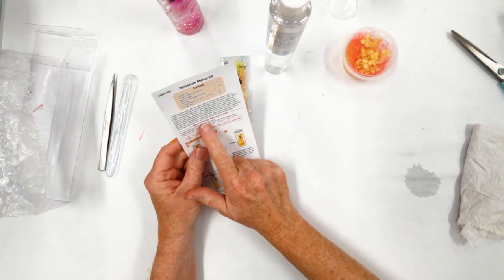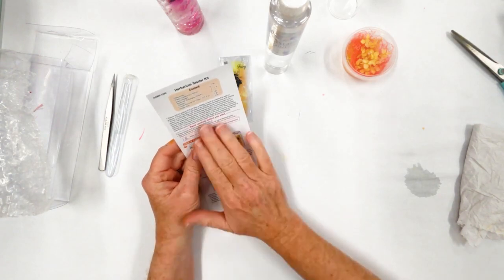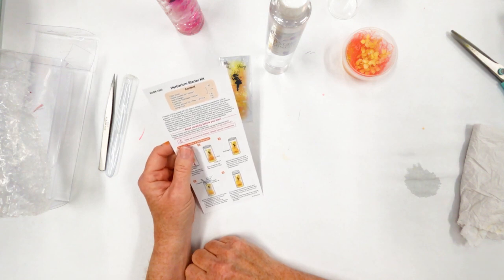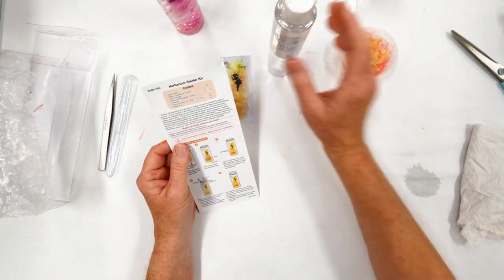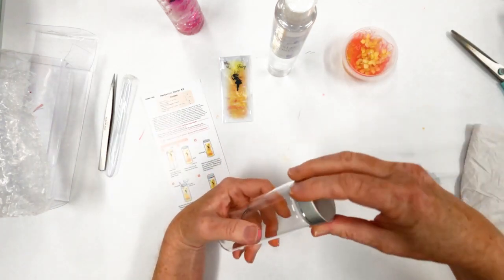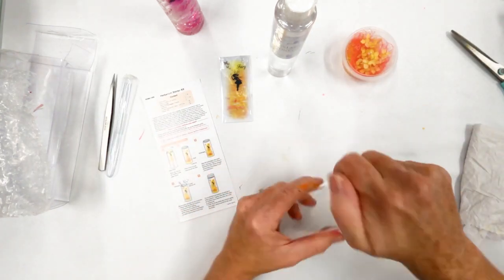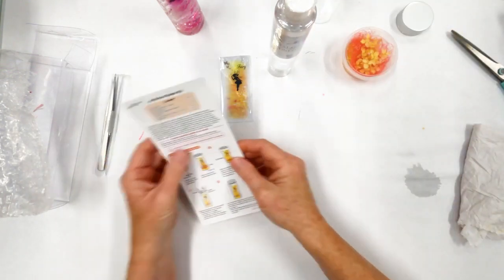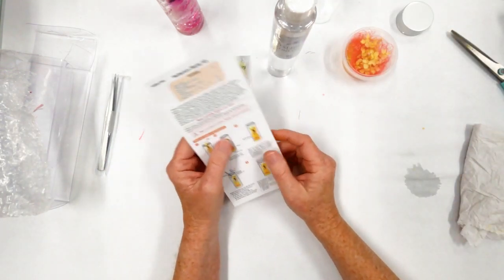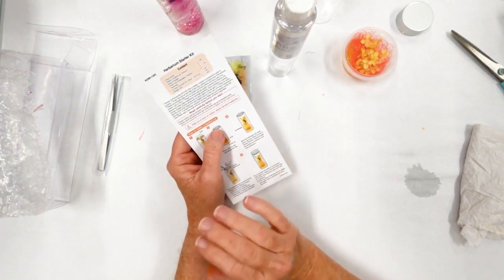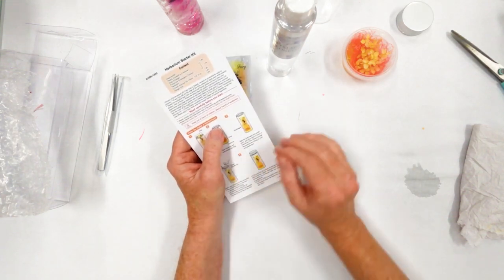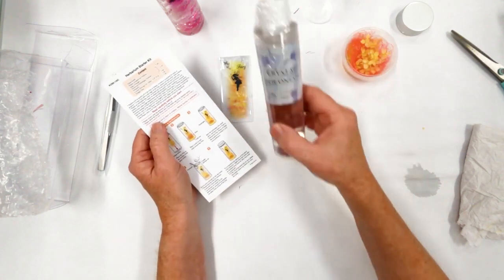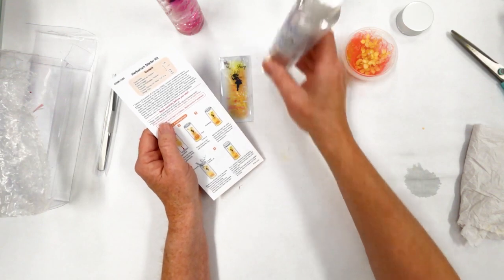And it does say read carefully before you start. So we're going to go over all of these instructions. It does say please check the bottle before you start to make sure the cap is on there tightly. Keep out of reach of children may be harmful if swallowed. I want you guys to be very careful with this and work with an adult when you are doing this herbarium kit and working with the silicone oil.